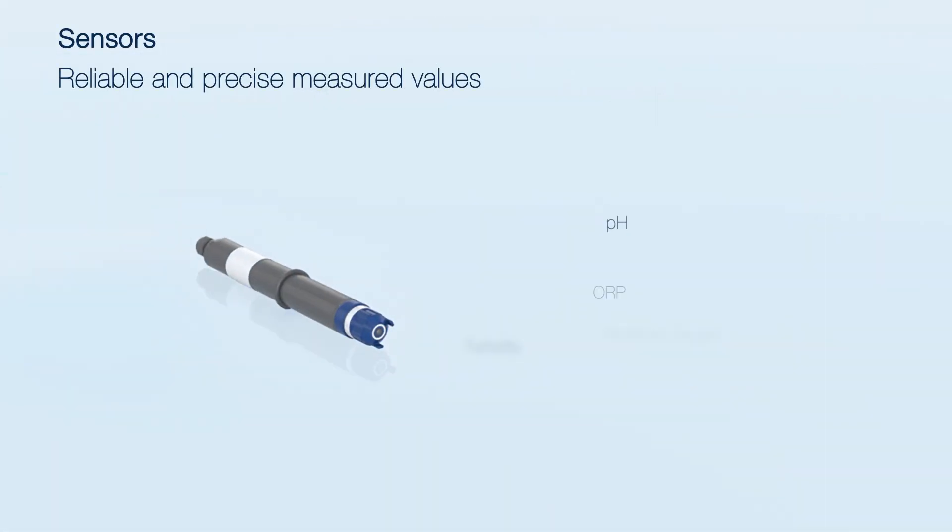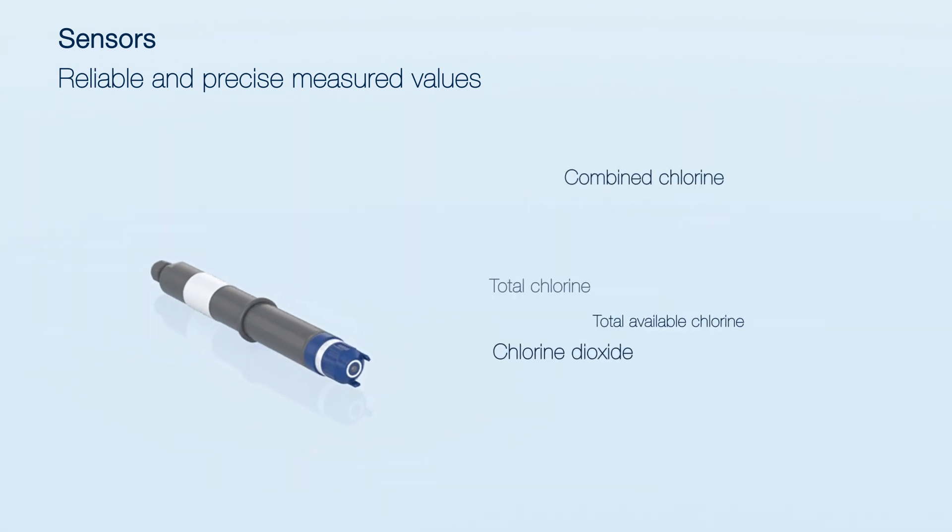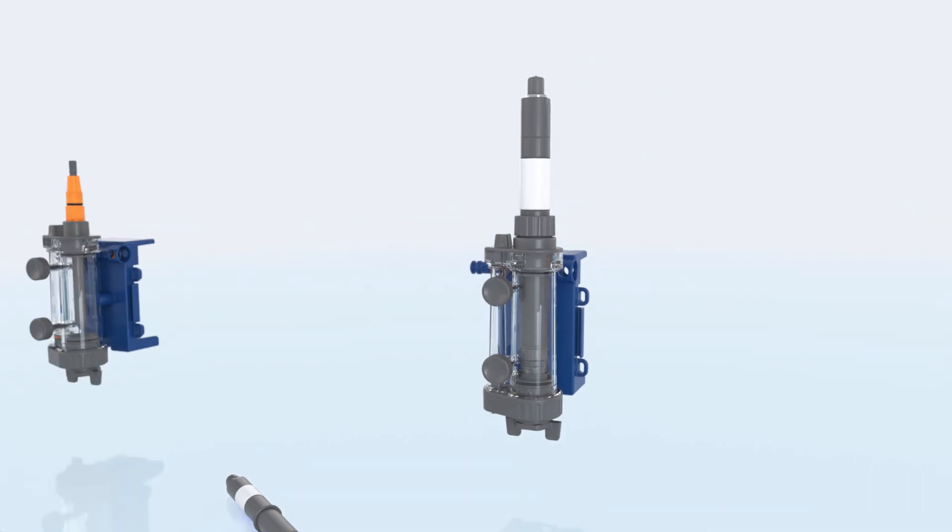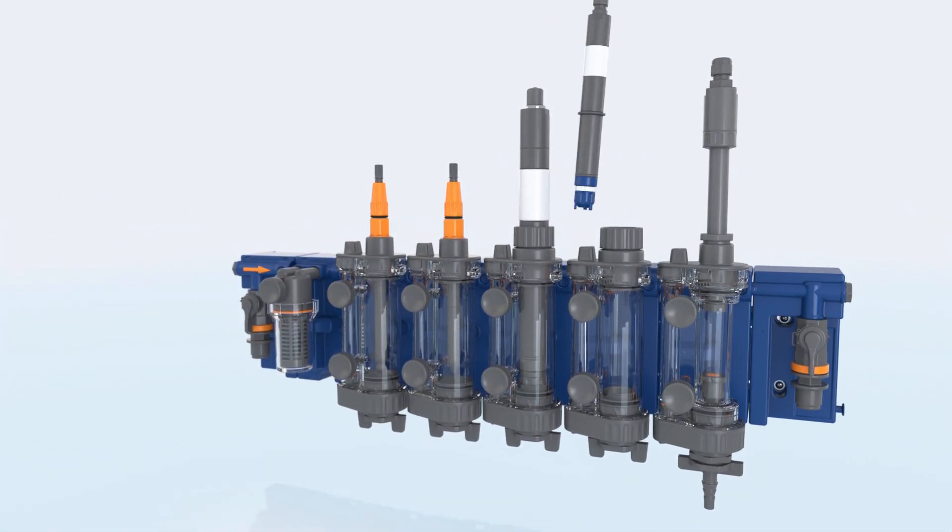Measurement and control technology sets the pace. ProMinent sensors provide reliable, precise measured values in real time for a wide range of parameters. They are easily installed in a bypass armature and ensure appropriate water treatment.